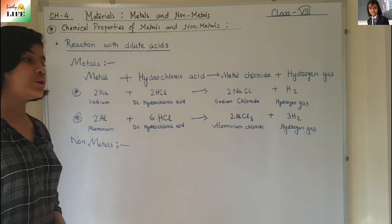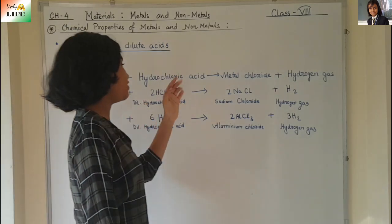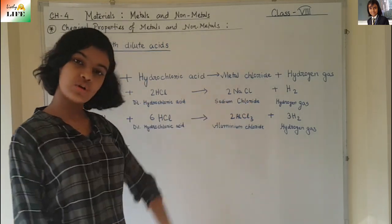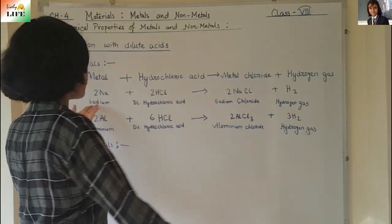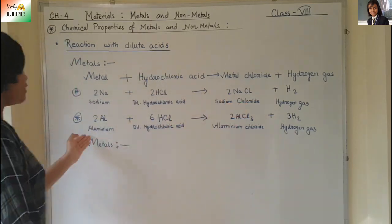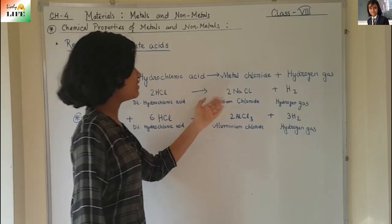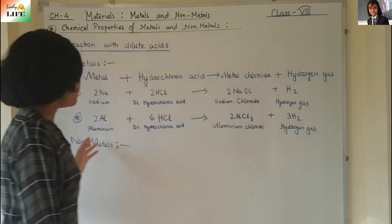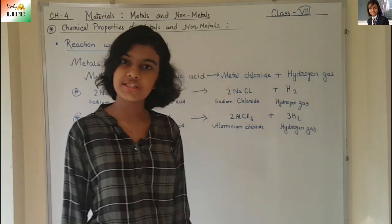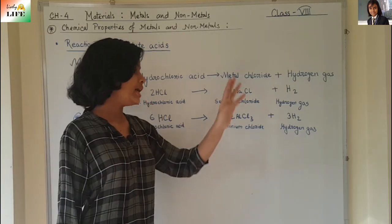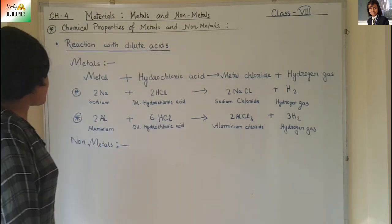For example, sodium is a metal — sodium reacts with dilute hydrochloric acid to form sodium chloride and hydrogen gas. Aluminium reacts with dilute hydrochloric acid to form aluminium chloride and hydrogen gas. These chlorides are colorless, and the hydrogen gas appears as bubbles.